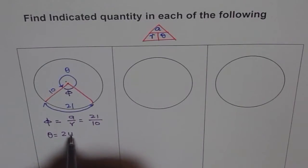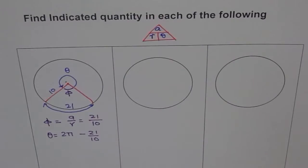But we are interested in the outside angle. So theta will be how much? Theta will be 2 pi, as you know, 2 pi is full circle angle, minus 21 over 10. So that is our answer. If the question says find the answer to two decimal places, you can always use your calculator and get the answer.